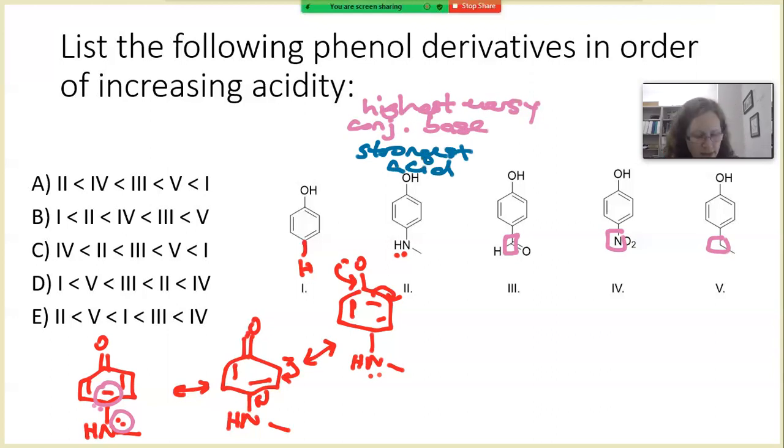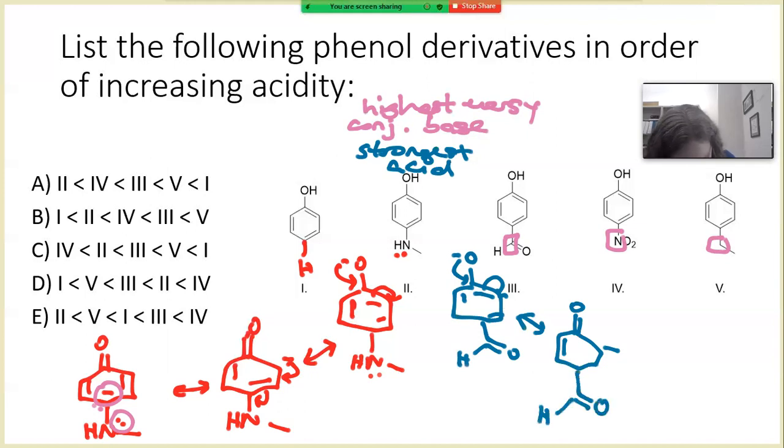Next, let's take a look at the aldehyde. For the aldehyde, we can draw the conjugate base that looks like this. And here, when we get to the resonance contributors, we will have this molecule and then we can again push the electron density down to here.